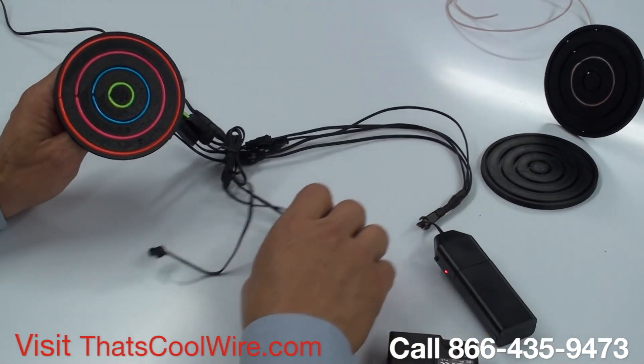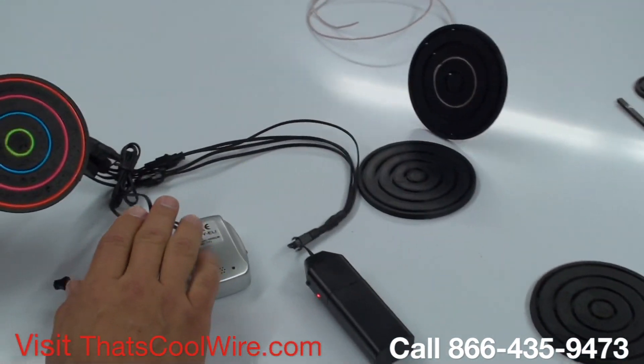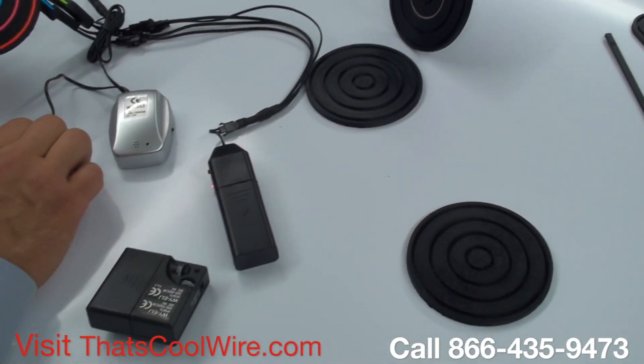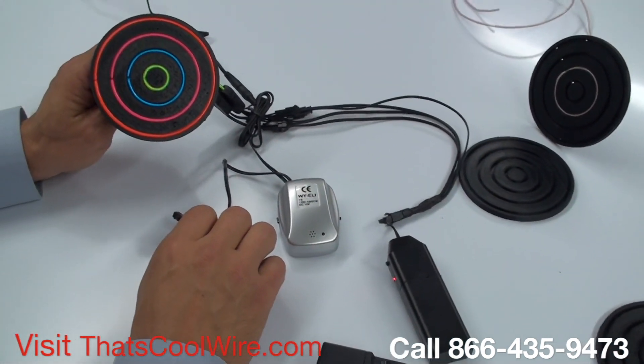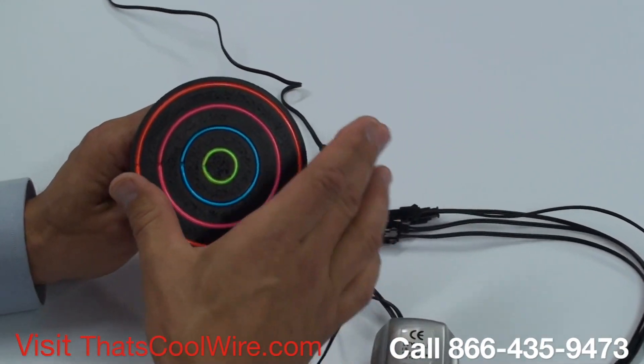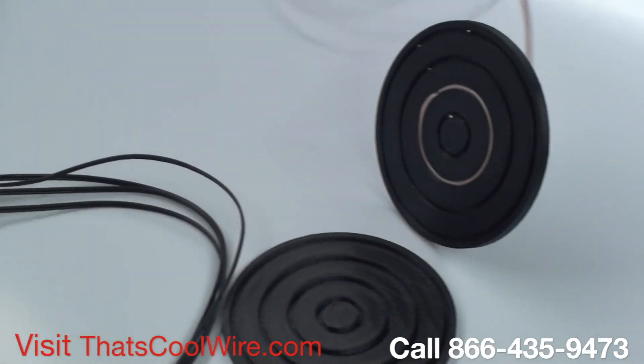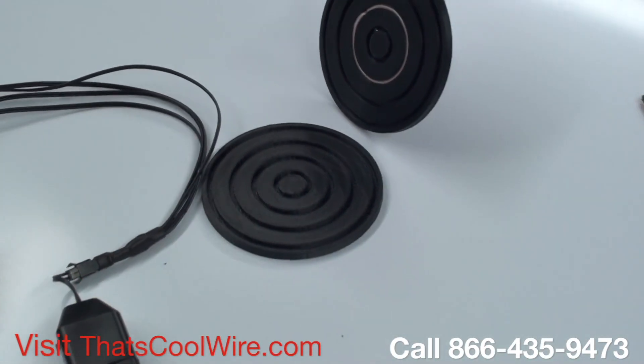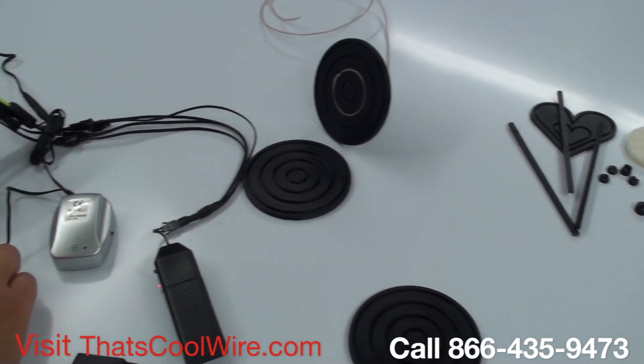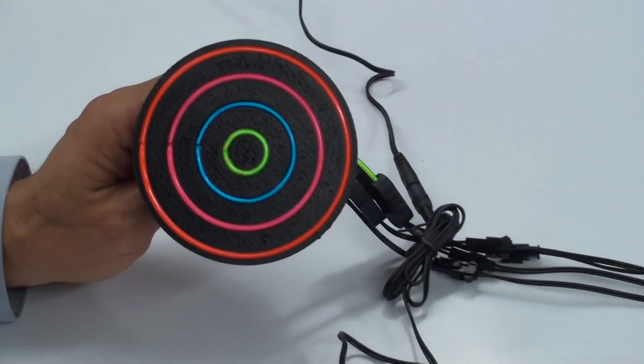So again we're really excited about all the mounts we're coming up with. It makes it really easy, it's really clean now to get some really cool designs. So we really do appreciate you watching this video. If you have any questions or if you need a custom mount made for you, maybe you need one with six circles, eight circles, a little bit bigger, a little bit smaller, you can have an L shape, it doesn't matter what you're looking for. We also do the design work and we can print it out. We really appreciate you watching this video at ThatsCoolWire.com, and if you have any questions call us toll free 866-435-9473.